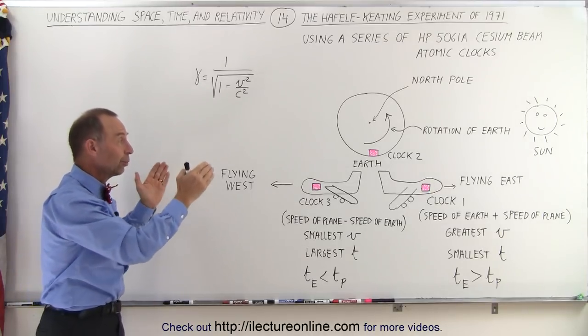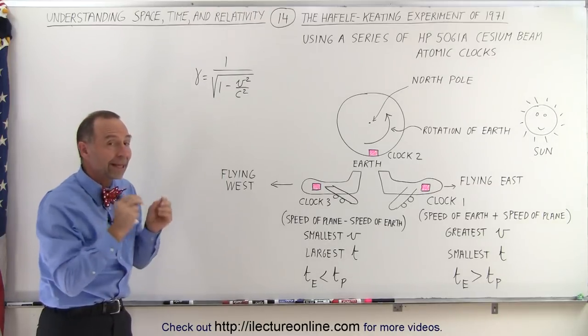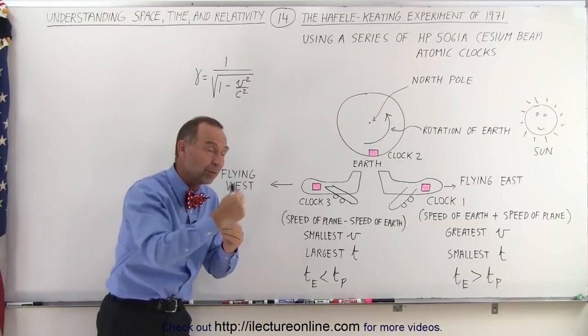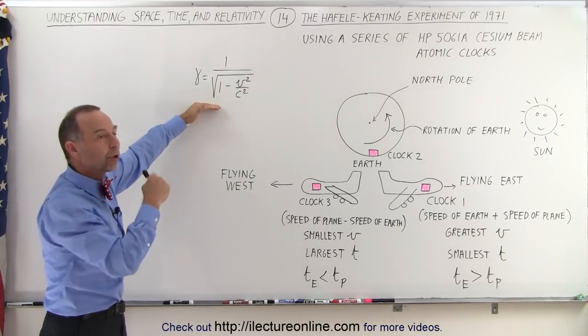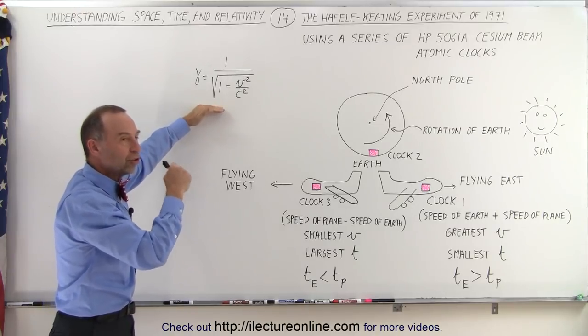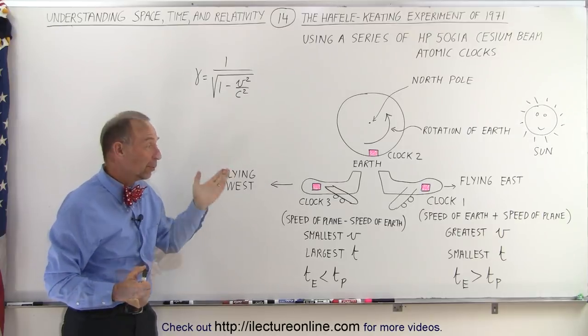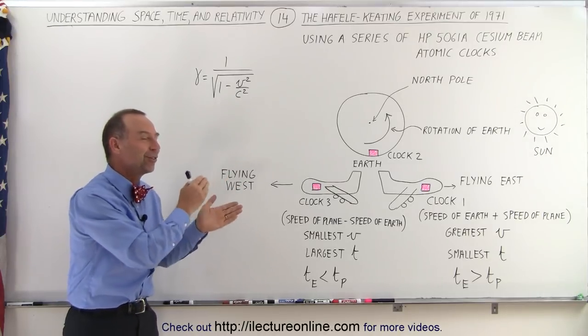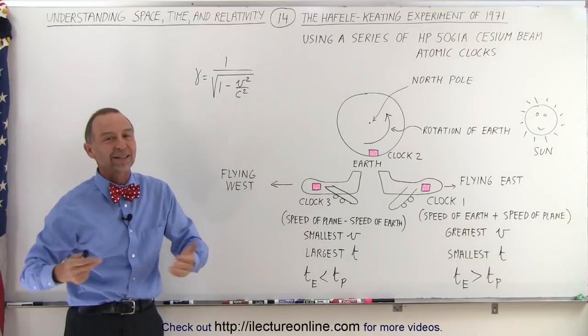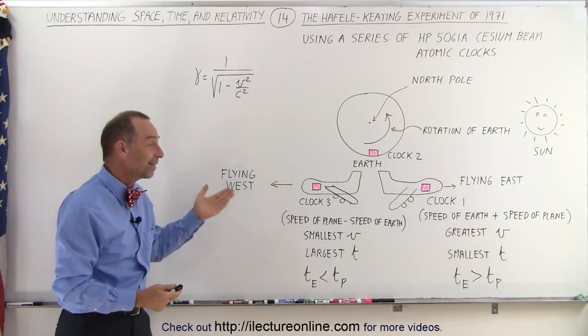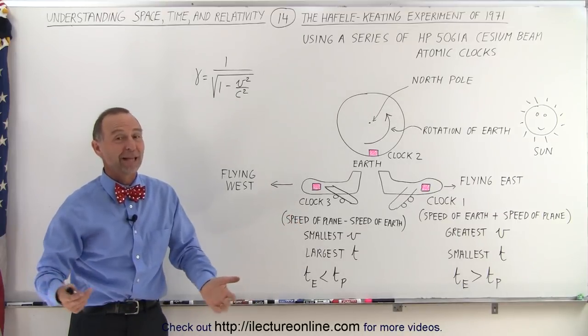This was a definitive experiment that proved not only that time slows down when you move faster toward the speed of light, but also that the equations we're using were correct in determining that change in time. The 1971 experiment showed that the equations of Einstein, the Lorentz transformations, were correct. Einstein was right that time slows down as the clock speeds up. And that's how we know.